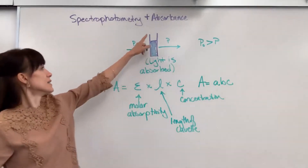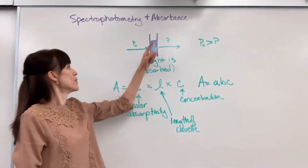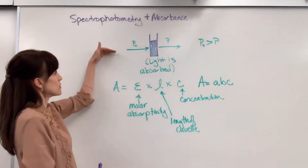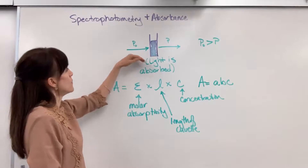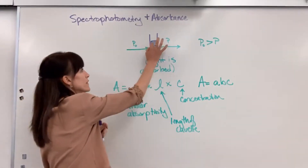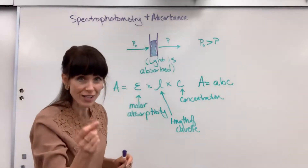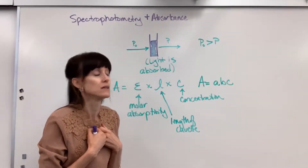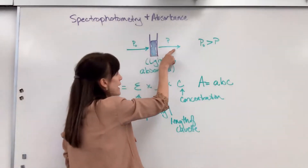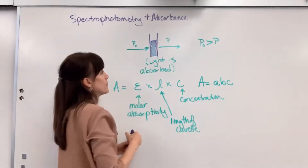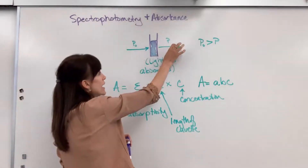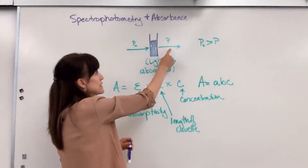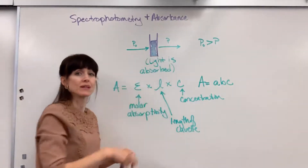What I've drawn here is a cuvette, and we have a bluish-purple solution inside of that cuvette. We're going to shoot light through that — that would be the incident light. As this light goes through, these particles, the concentration, these particles are going to absorb some of that light. Not all the light will be absorbed; some of the light will actually pass through the cuvette, and I've labeled that as P. The amount of light that goes through the cuvette is definitely going to be less than the amount of light that we put into it.